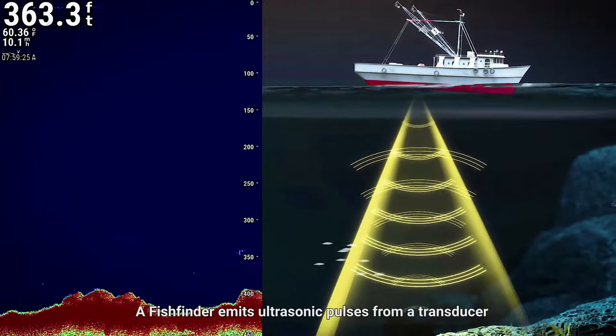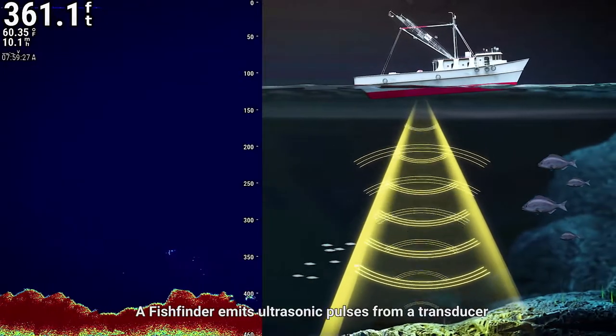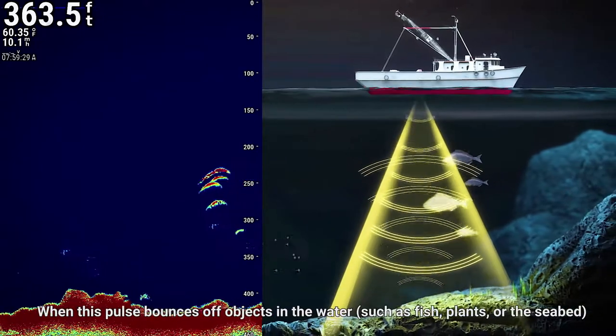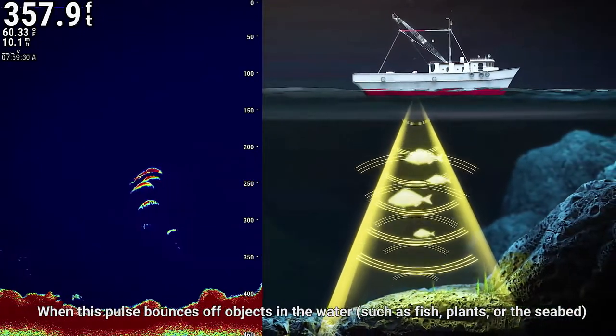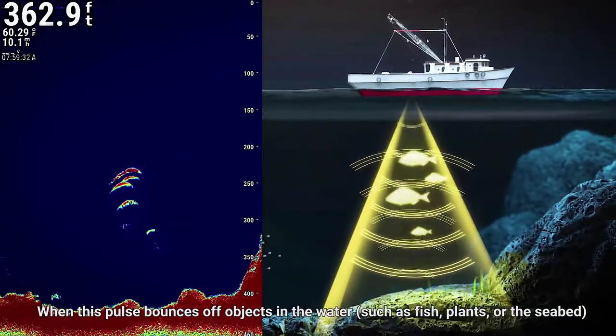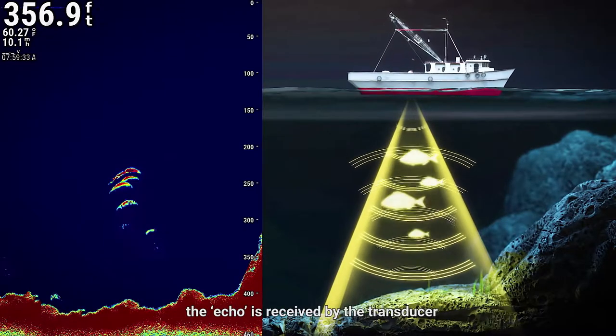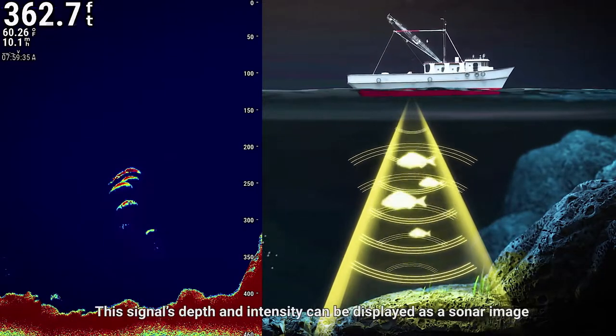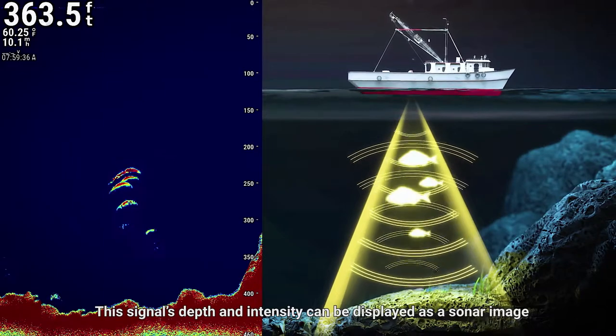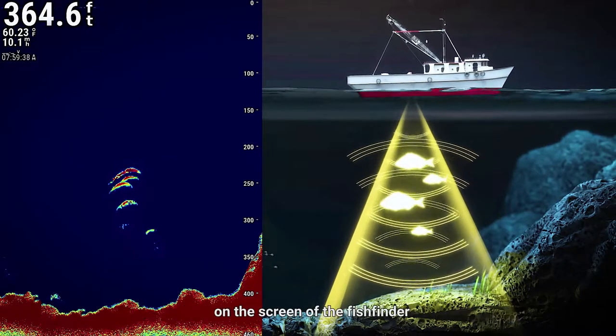A fish finder emits ultrasonic pulses from a transducer. When this pulse bounces off objects in the water, such as fish, plants or the seabed, the echo is received by the transducer. This signal's depth and intensity can be displayed as a sonar image on the screen of the fish finder.